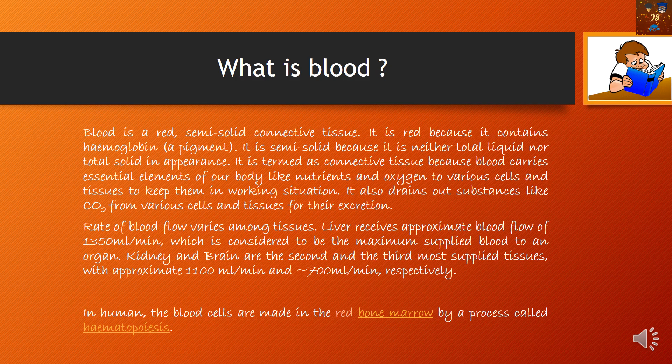Blood is a connective tissue because it carries nutrients and oxygen throughout the body, which helps in metabolism and nutrition. It also drains out the waste products of metabolism, like carbon dioxide, from cells and tissues to the excretory organs.